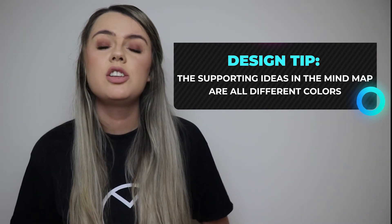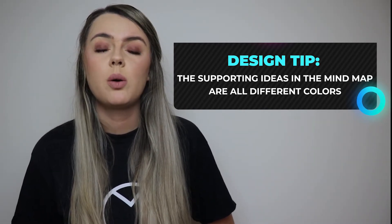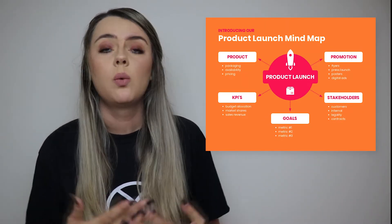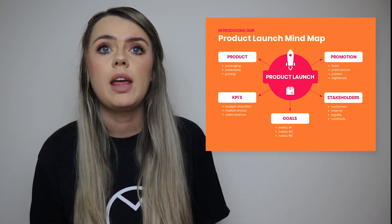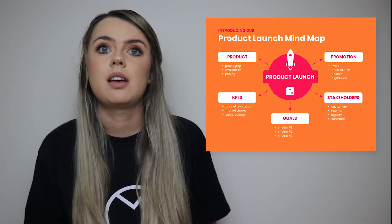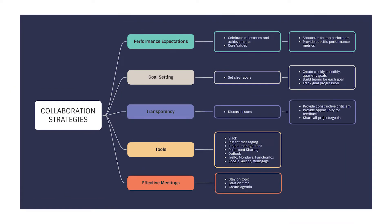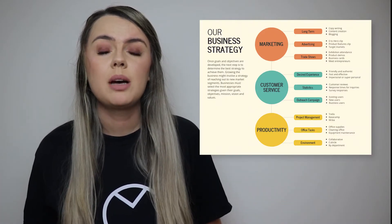Goals need to be specific and the strategy map should address the steps required to meet them. This product launch map addresses all aspects of the process: what specific metrics will be measured and what factors will be at play to affect success. A collaboration strategy includes multiple aspects that you need to expand on, and bullet points make the information easier to understand.